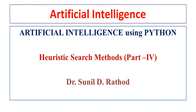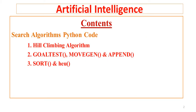Welcome to the world of Artificial Intelligence — the AI using Python series of lectures. This is lecture on search methods, part 4. I am Dr. Sunil from GCS Solutions. In this lecture we see Python code of the hill climbing algorithm, along with sub-algorithms like Goaltest, Moogen, Append, and also the sort and heuristic functions.